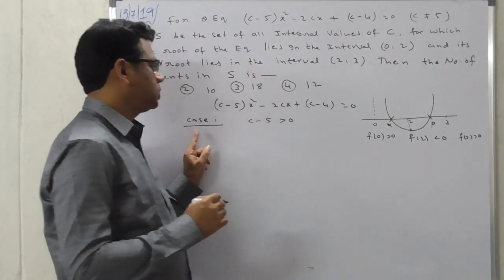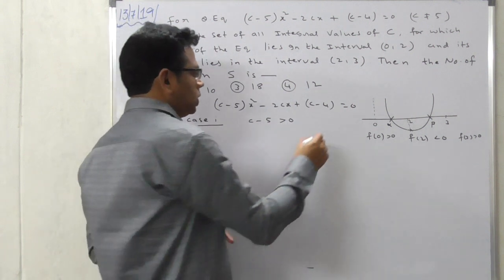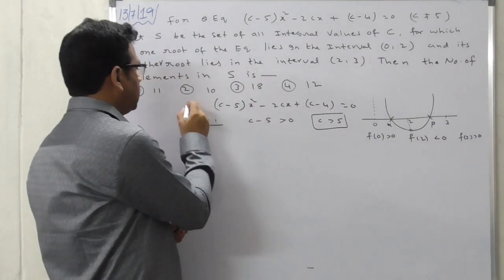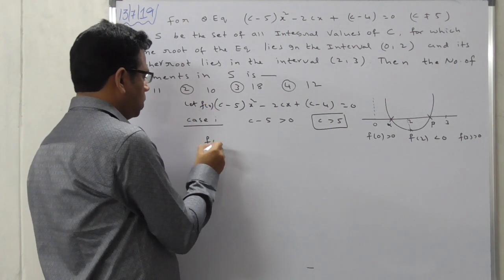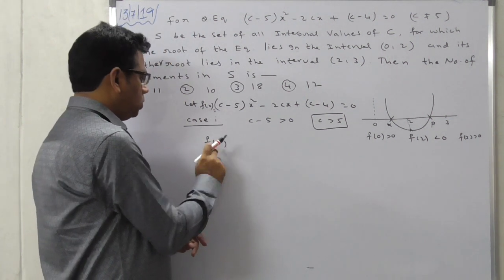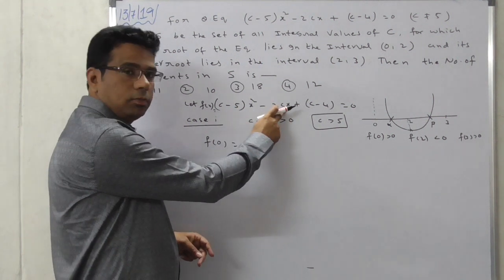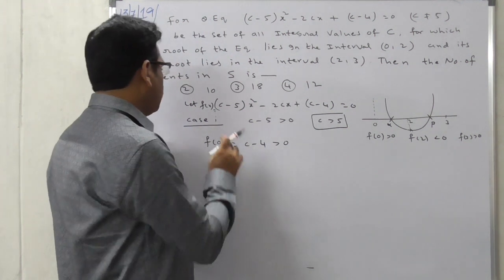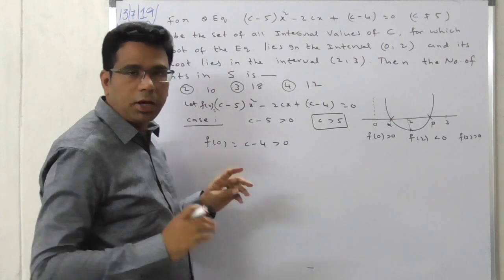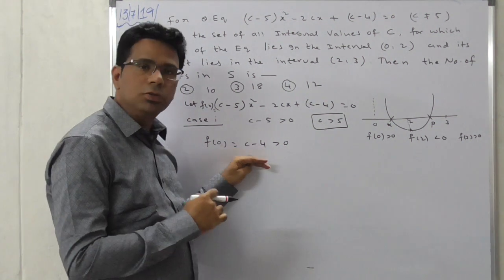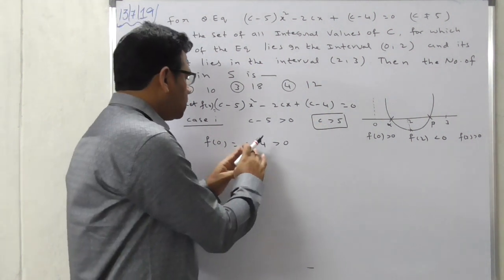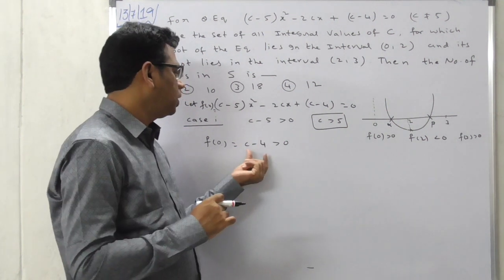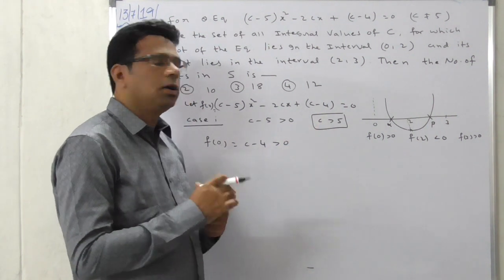In Case 1, the coefficient of x² is positive, so c minus 5 > 0, which implies c > 5. Now check f(0): substituting x = 0 into f(x) gives c minus 4. Since f(0) > 0, we get c minus 4 > 0, meaning c > 4. On the basis of c > 5, all values satisfy this inequality, so we write c ≥ 6 for integral values.